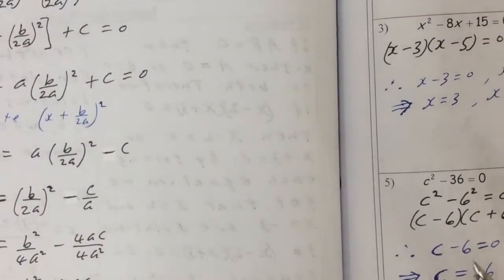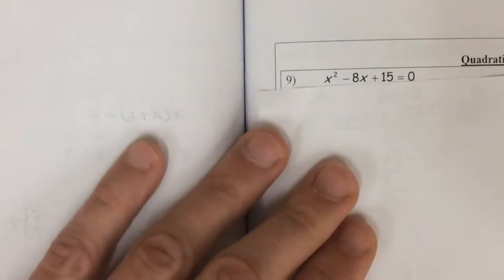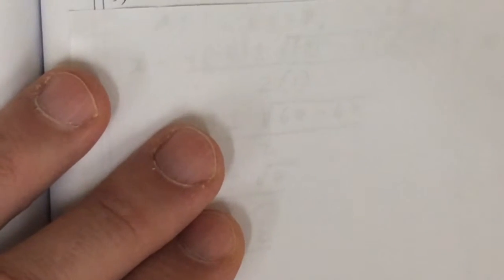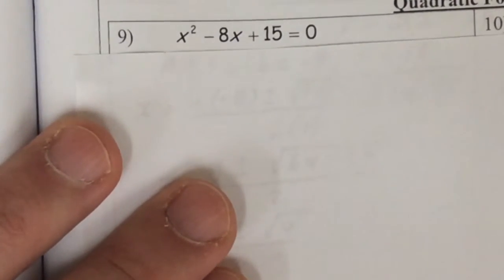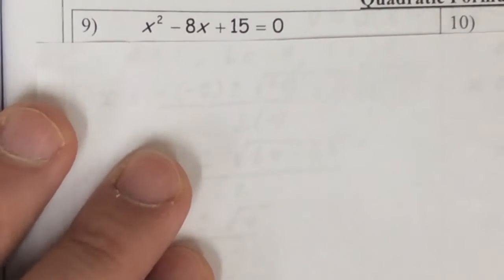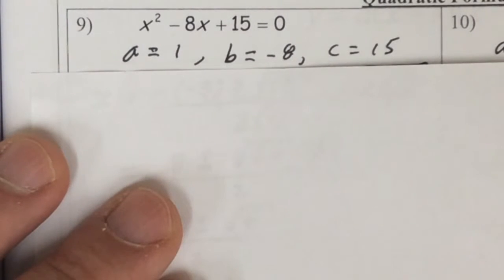Now, some examples. So first example, it's going to be right here. So x squared minus 8x plus 15 equals 0. We know a is 1, b is negative 8, c is 15.